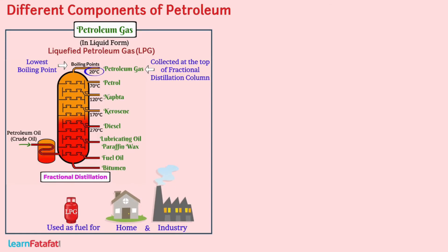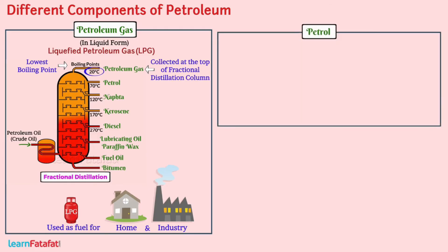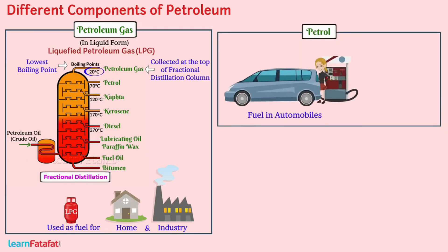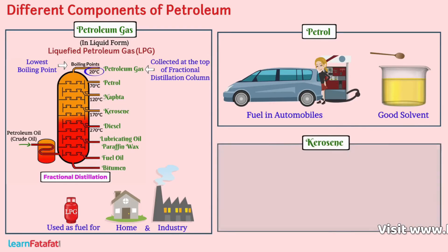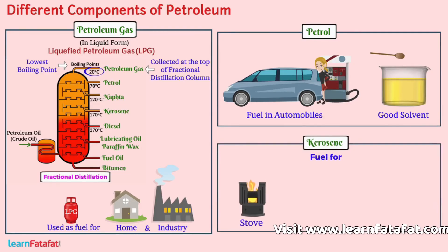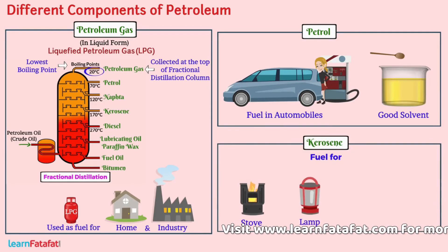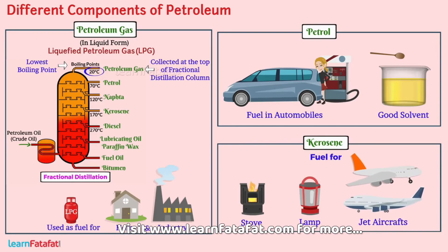Subsequently, we obtain petrol, which is a fuel used in automobiles. It is also a good solvent. Kerosene is a fuel for stoves, lamps, and jet crafts.